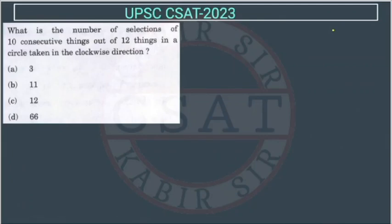Now let us see this question. This question is from permutation and combination. What is the number of selections of 10 consecutive things out of 12 things in a circle taken in a clockwise direction?